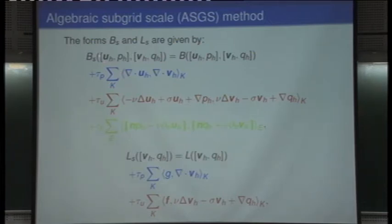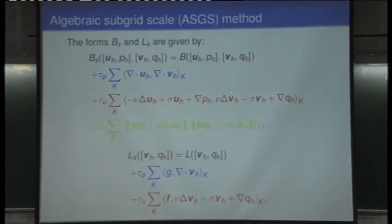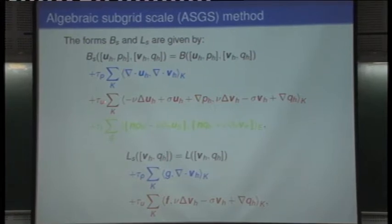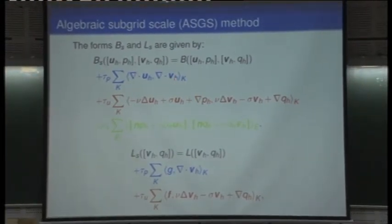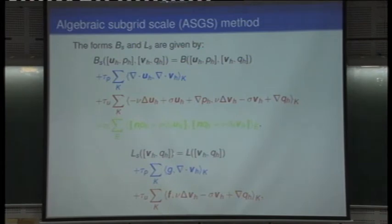Let us analyze the method. The stabilized bilinear form has the Galerkin part, plus one term that is the residual of the momentum equation — the first equation — multiplied by the adjoint applied to the test functions, multiplied by a parameter tau_u (which we called tau_1), plus the residual of the second equation multiplied by the adjoint operator applied to the test function multiplied by parameter tau_p. If you want to account for boundary terms, you add this jump. The blue term on the right-hand side corresponds to the residual of the continuity equation, and the other term minus f is the residual of the momentum equation.